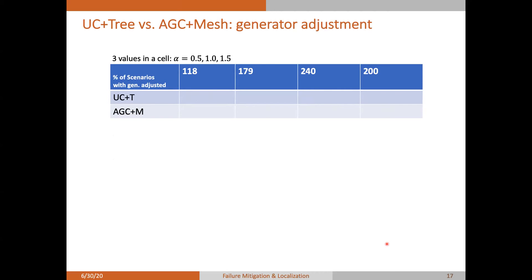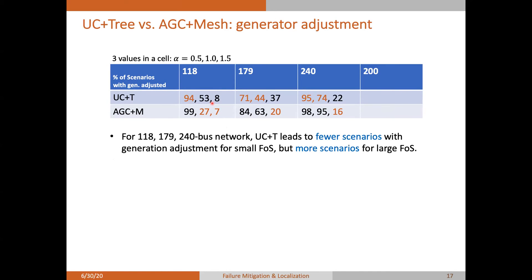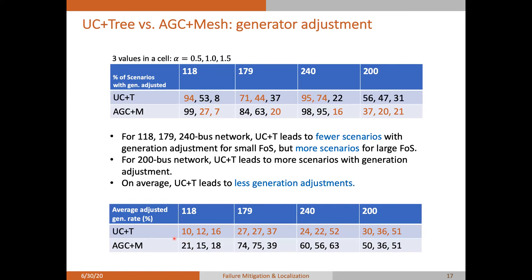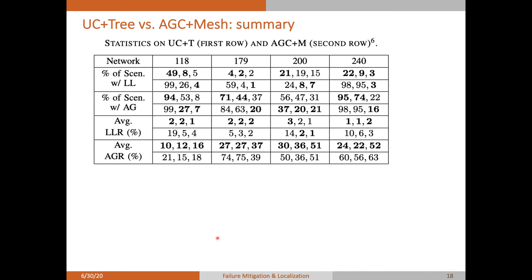Let's look at the generation adjustment then. Similarly, we show the fraction of scenarios with non-zero generation adjustment. Again, for the first three networks, we see fewer scenarios with generation adjustment for a smaller FOS, but there are more scenarios with a larger factor of safety. For 200 buses, our approach leads to more scenarios with generation adjustment. But on average, if we compare the average adjusted generation rate, we see UC tends to adjust fewer generators. So in summary, our approach responds more actively to adjust generators and loads, but more locally in response to failures. Even though the system congested level isn't very high, our approach still actively adjusts to the generation or load so that you see more scenarios with generator adjustment.